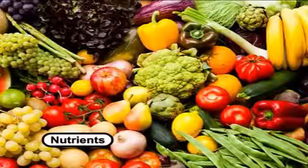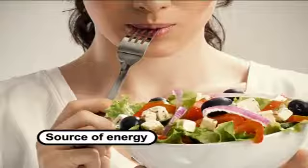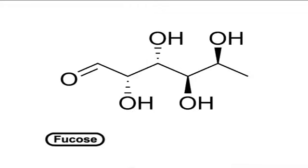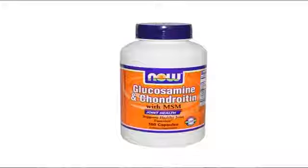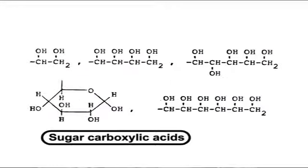Carbohydrates represent one of the basic nutrients and are quantitatively the most important source of energy. Carbohydrates also include other compounds which vary in the general formula but retain the chemical nature of carbohydrates. These include deoxysugars such as deoxyribose, fucose, and rhamnose; amino sugars such as glucosamine and sialic acid; and sugar carboxylic acids such as glucuronic acid and neuraminic acid.